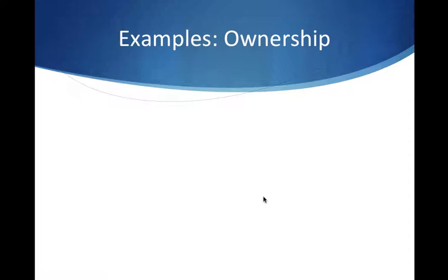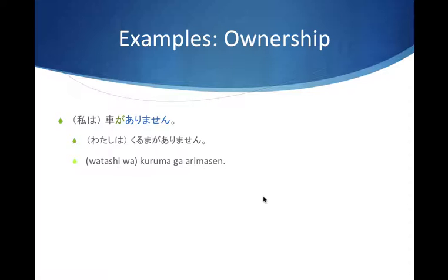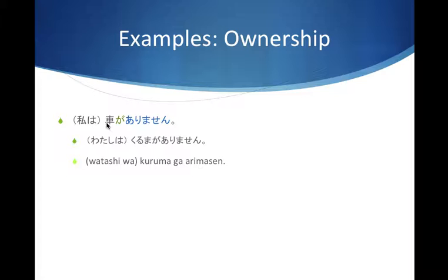Now let's look at ownership examples. Say you don't have a car — how would you say that? You can simply say 'kuruma ga arimasen.' Kuruma means car. Literally it means 'there is no car,' which in context means 'I don't have a car.' The subject watashi wa is usually omitted if it's clear from context that you're talking about yourself.